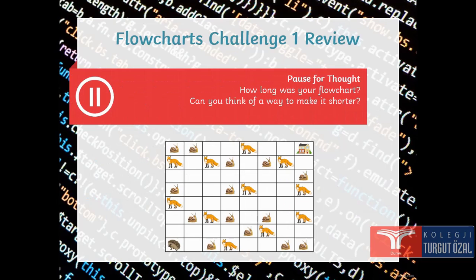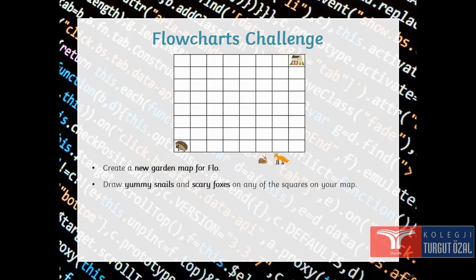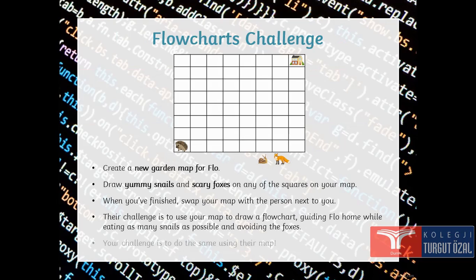Here. Think. How long was your flow chart? Can you think in a way to make it shorter? Here. Create a new map garden for Flow. Draw yummy snails and scary foxes on any of the squares of your map. When you have finished, swap your map with the persons next to you.